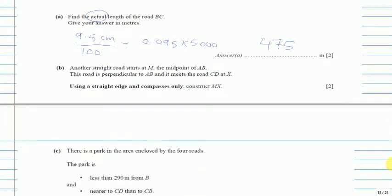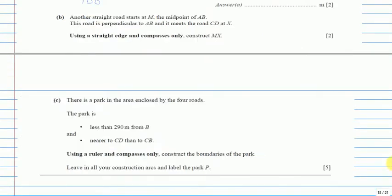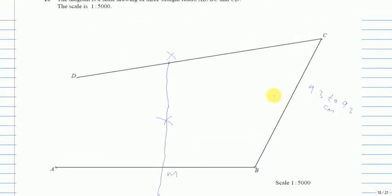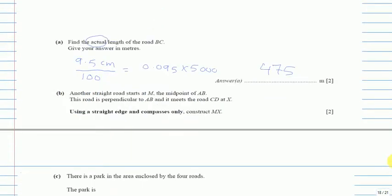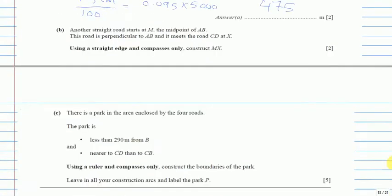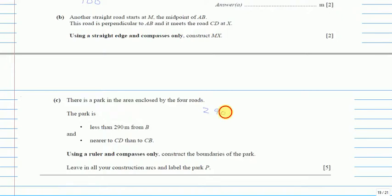Part C: there is a park in the area enclosed by the four roads. The park is less than 290 meters from B, so we need to mark all areas within 290 meters of B. First, convert 290 meters to the paper value in centimeters: multiply by 100 then divide by 5000. This gives 5.8 centimeters.